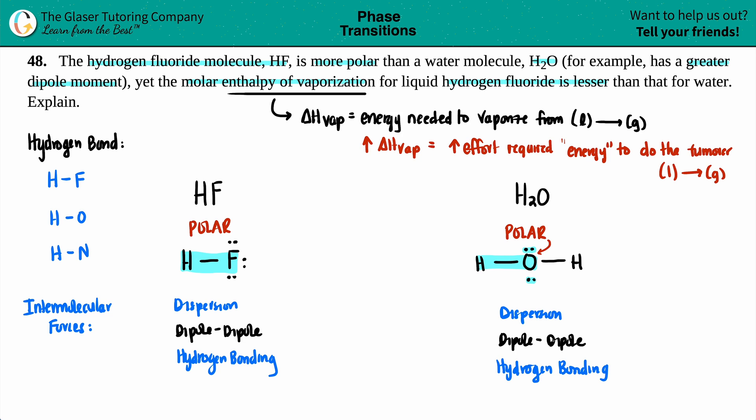So that doesn't really explain the difference in the molar enthalpy of vaporization. However, if we just look a little bit closer, for HF, we have one bond, potentially, that could hydrogen bond. It's literally just an H and an F.